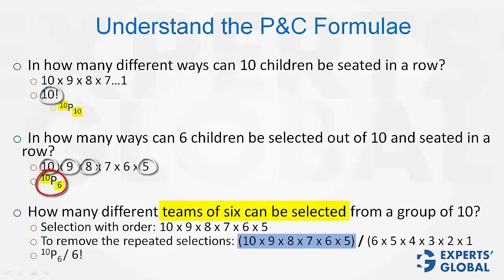In simple terms, this is 10P6 divided by 6 factorial. And this is what combinations is. This turns out to be 10C6.